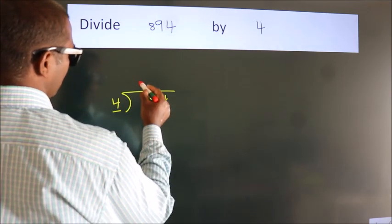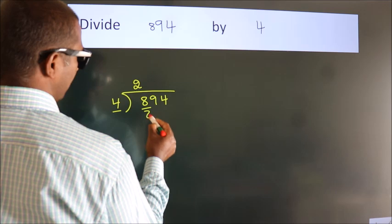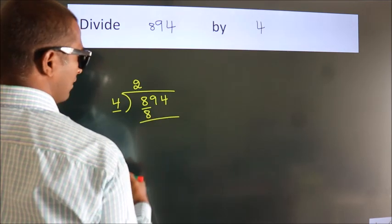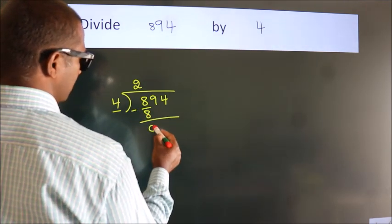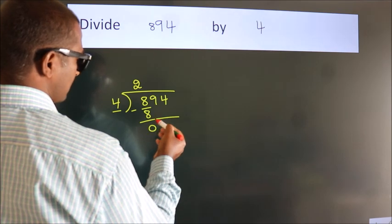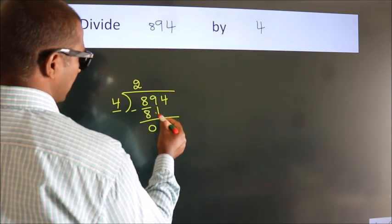Now we should subtract. We get 0. After this, bring down the beside number.